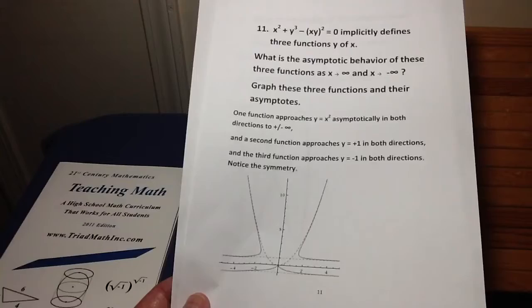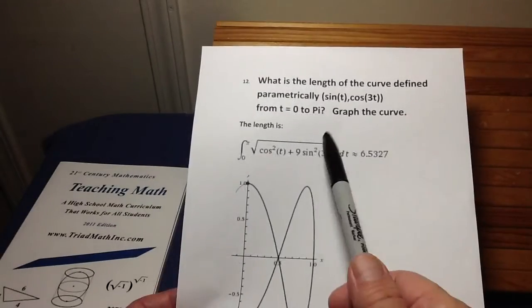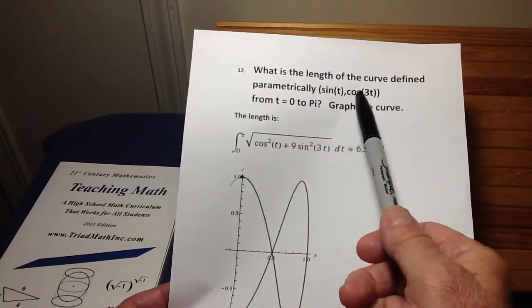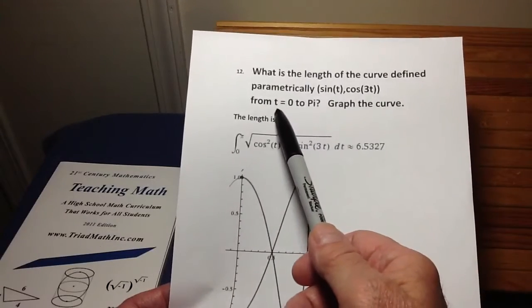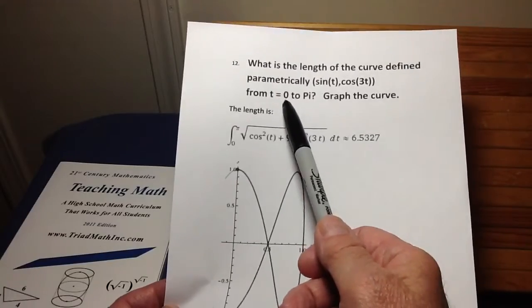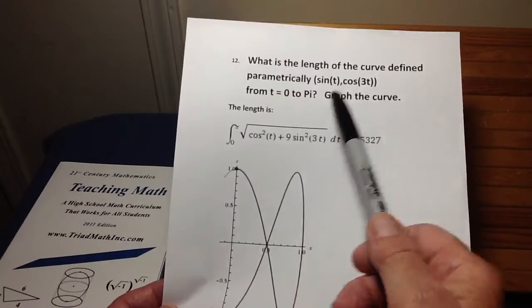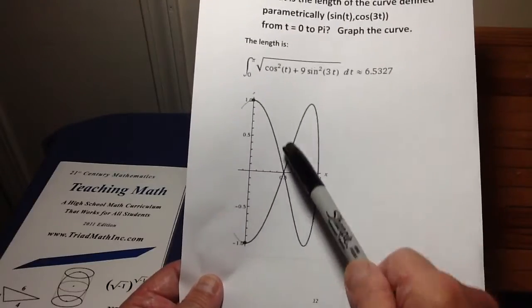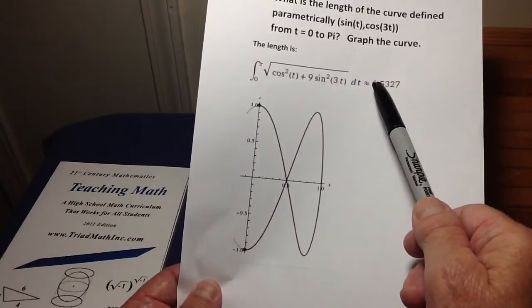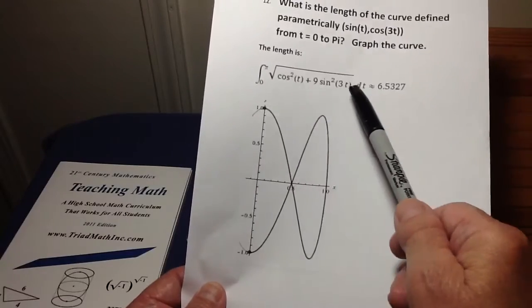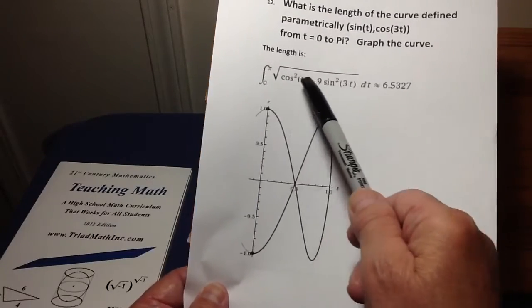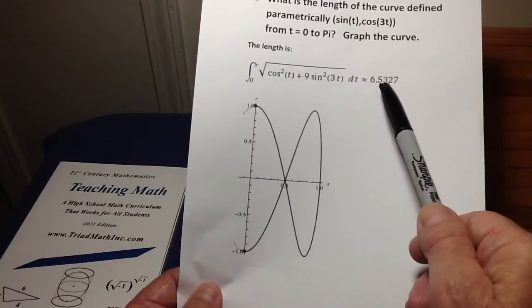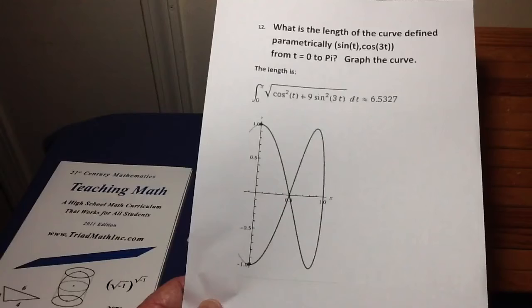One last example here. Suppose you have a curve that's defined parametrically, sine t, cosine of 3t. And you want to know what is the length of this curve as t goes from 0 to pi. And you want to graph it. Well, Wolfram Alpha not only will graph the curve parametrically, it will calculate the arc length of it, and there it is. Setting up this integrand is not very difficult to do if you understand the calculus at that point, but evaluating is very difficult. And again, Wolfram Alpha just does this for you automatically. So Wolfram Alpha is just this unbelievably powerful tool for solving STEM problems.